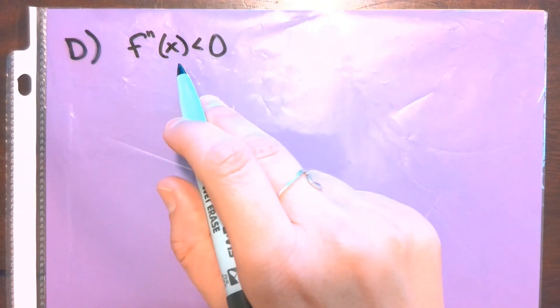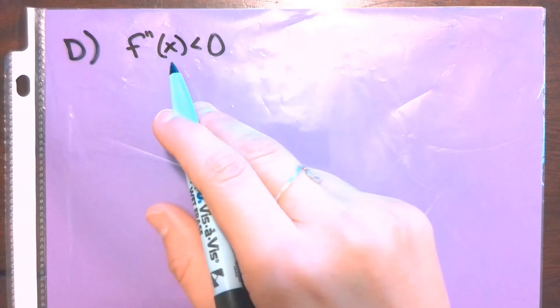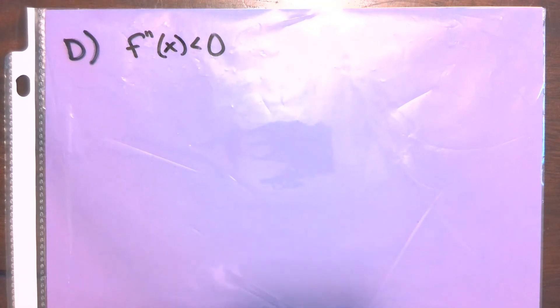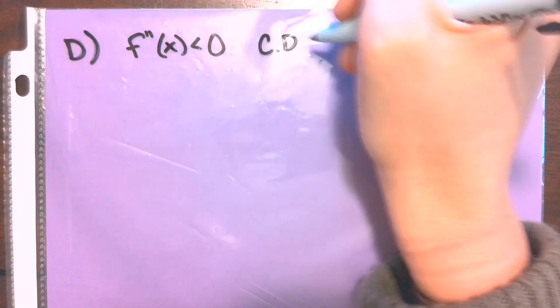So we also tell us that f double prime of x is less than 0. And this is really the biggest part of this, because it's going to give us a little bit of context for why we're able to answer this using tangent and secant lines. So my f double prime of x being less than 0, remember that if your second derivative is less than 0, that means that your graph is concave down.